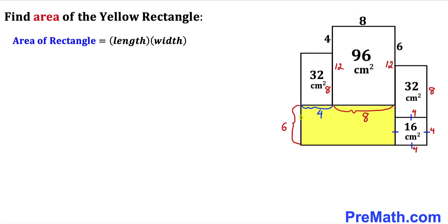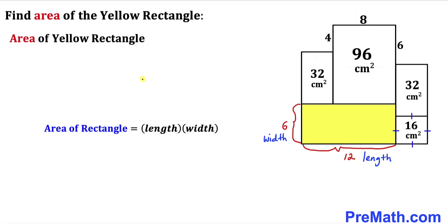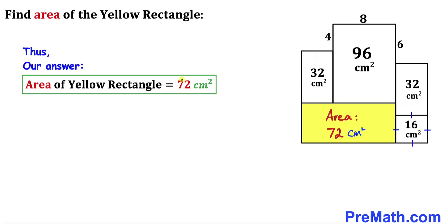Therefore this whole combined length has got to be 4 plus 8, which gives us 12. Thus the length of this yellow shaded rectangle is 12 centimeter. Here's our final step: let's calculate the area of this yellow shaded rectangle where our length is 12 and width is 6. Using the area formula, this is going to be 12 times 6, which turns out to be 72 centimeters square. So the area of this yellow rectangle turns out to be 72 centimeters square. Thanks for watching and please don't forget to subscribe to my channel for more exciting videos.